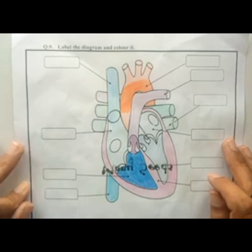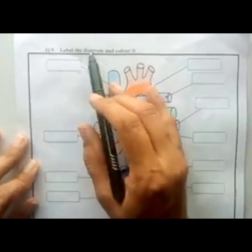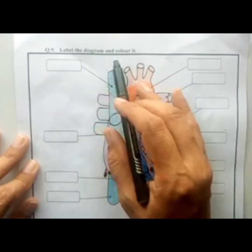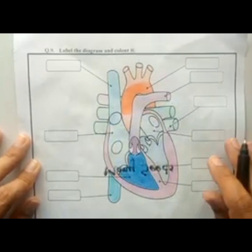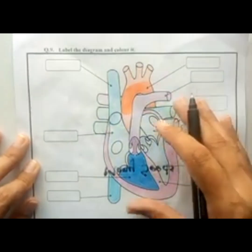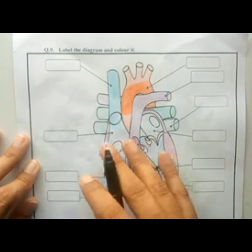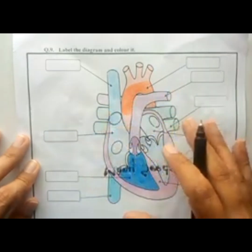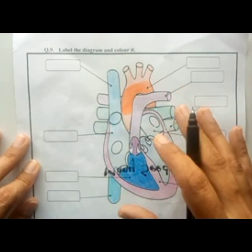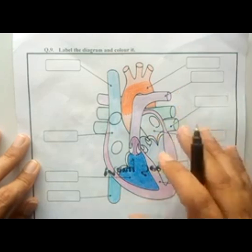Welcome students. I hope you are fine and enjoying your summer vacations. At this page, students have a diagram of the heart and we have to label all the parts of the heart and also color them.